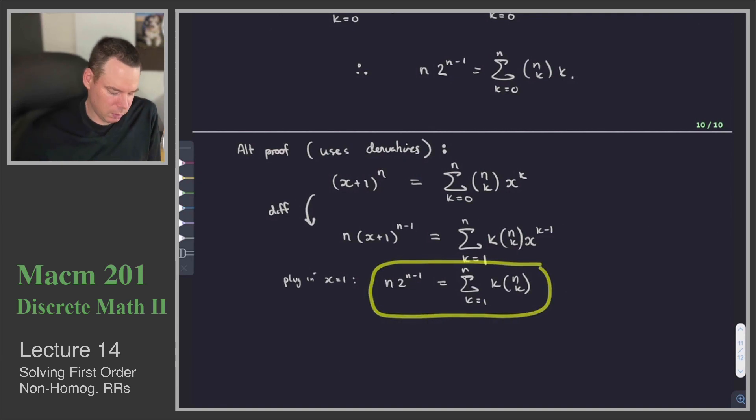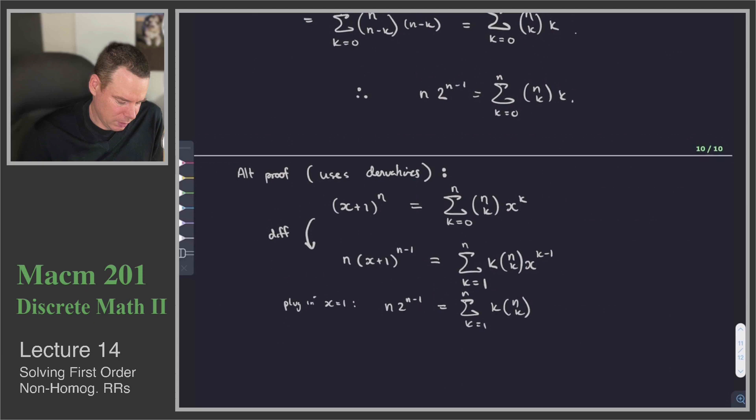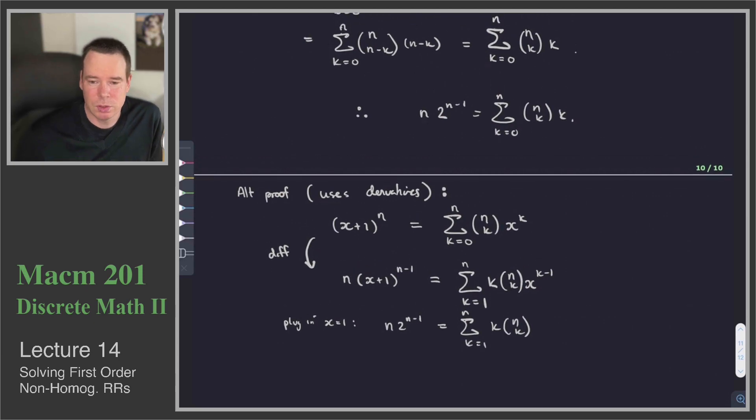So there we go. We've got our solution in a different way. The first one used a combinatorial proof, the second one used derivatives. That's it for this section. I wanted to finish off with some of these useful summation formulas that are going to come up in our techniques for solving first order non-homogeneous recurrence relations. Thanks very much for watching and we'll see you again next time.